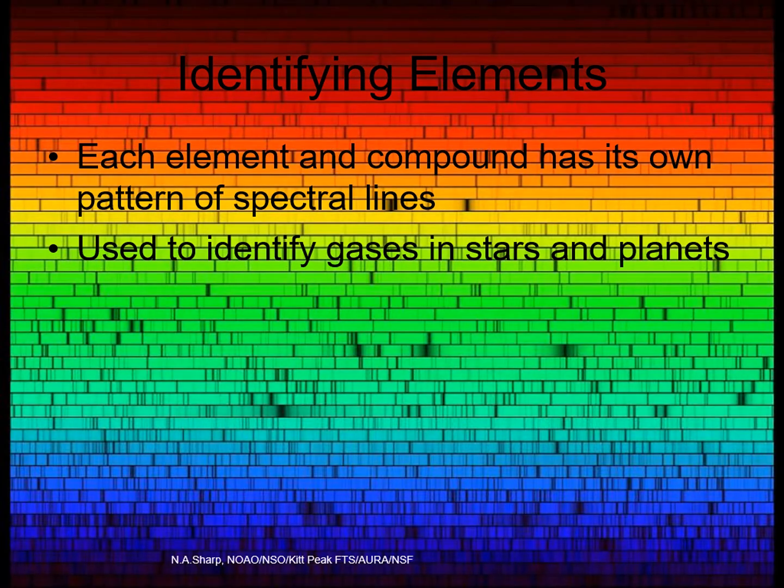Have a look at this spectrum of the sun. It's been spread out incredibly long, so they've had to split it up into dozens of smaller pieces just so they could fit it onto a page. Each of the dark, vertical bands is an absorption line. These lines are produced by the gases in the sun's and the Earth's atmospheres. As you can see, there are hundreds of lines here, produced by numerous chemical elements.